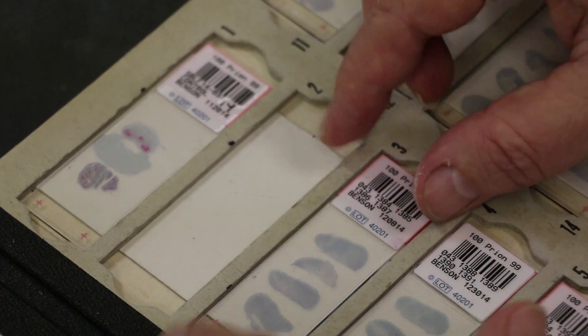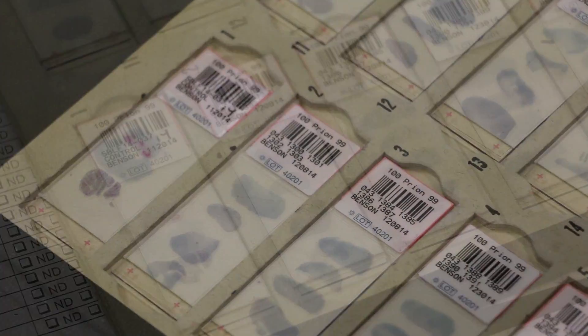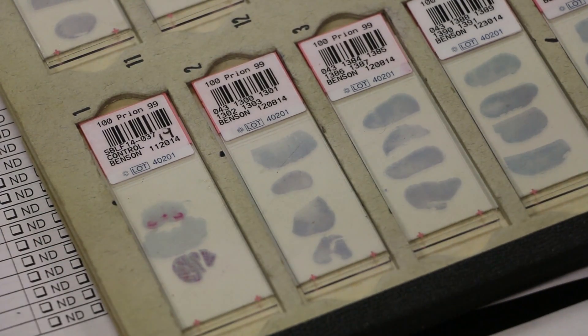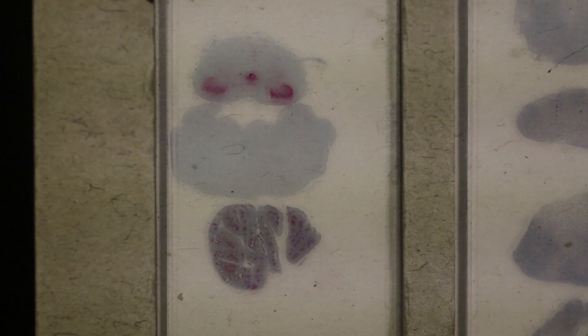A sample that is known to be positive is included with each batch of slides for staining to be sure the process works properly. In some cases, the red staining is visible even without magnification.